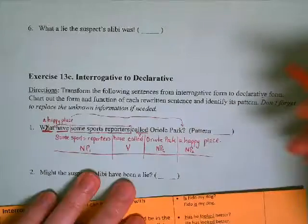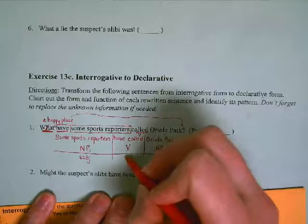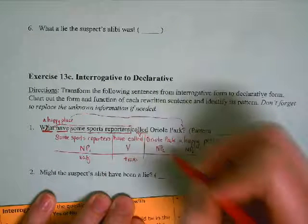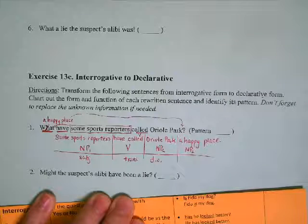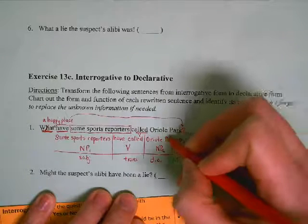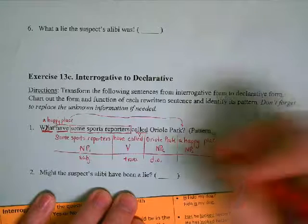This is my subject. I know I have a transitive verb because I have a noun phrase. 'What have they called?' Oriole Park. It's my direct object. And 'a happy place' is the renaming that is caused by my verb.